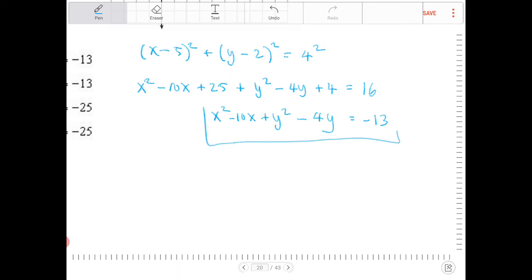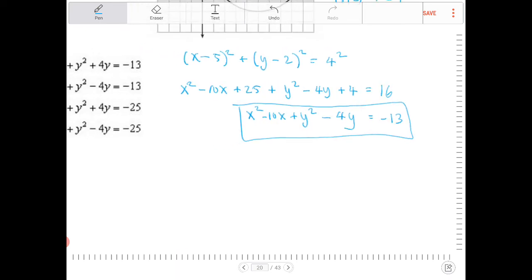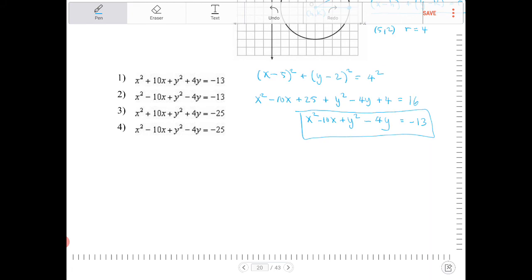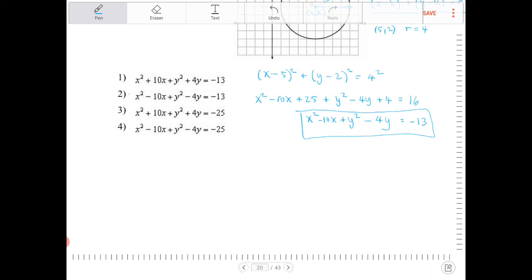This is the answer, and the answer choice that matches this is answer choice number 2: x² - 10x + y² - 4y = -13.